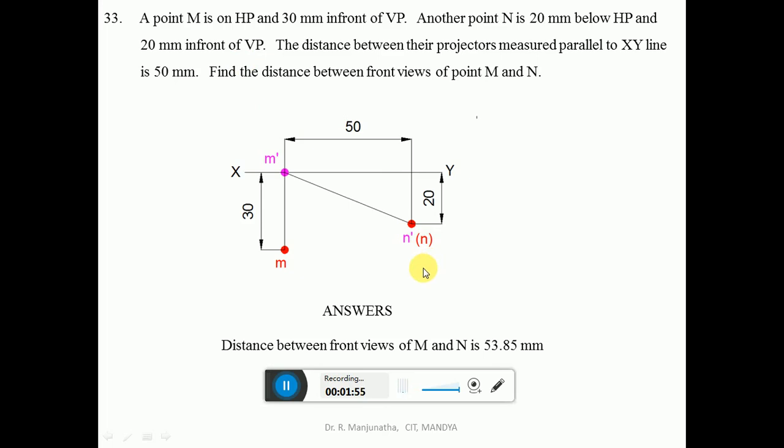Find the distance between the front views of M and N. Draw a line joining between the front views of M dash and N dash. Then measure the distance by using the scale between M dash and N dash.